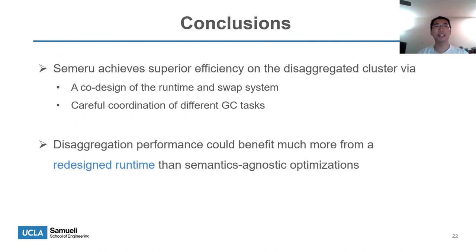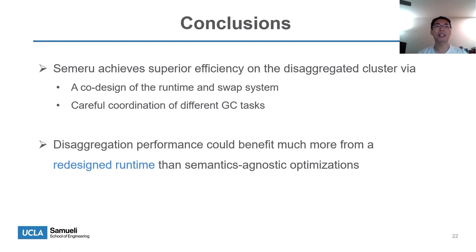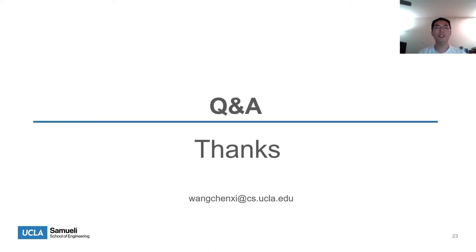In conclusion, SAMRU achieves superior efficiency on the disaggregated cluster through two key things: first, a co-design of the runtime and the swap system; and second, careful coordination of different GC tasks — for example, tracing on the memory server and compaction on the CPU server. We can also see that disaggregation performance could benefit much more from a redesigned runtime than from semantics-agnostic optimizations. Thank you for joining me today. If you have any questions, please feel free to ask, or you can send me an email later.